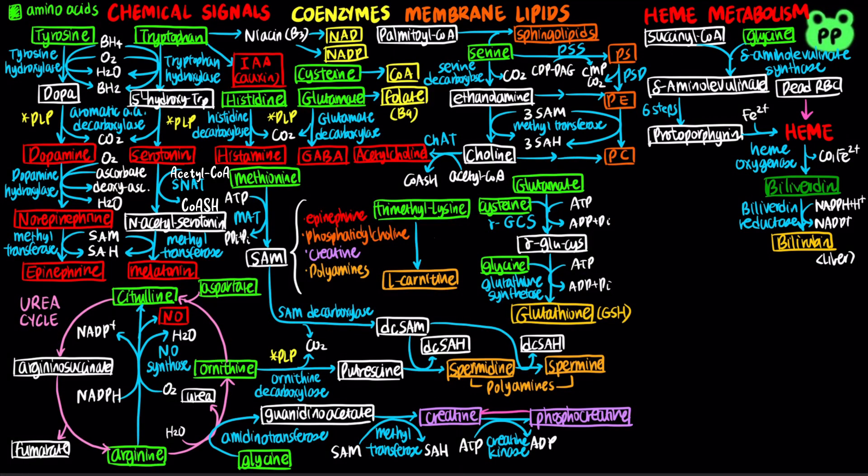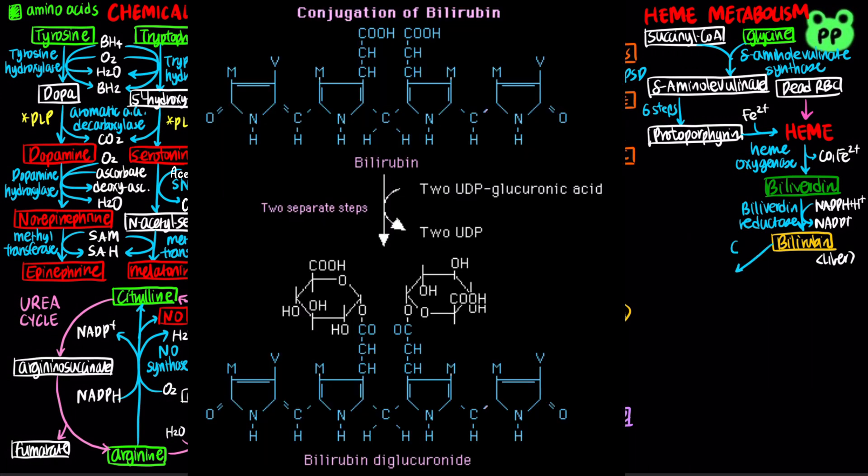Bilirubin is largely insoluble and travels in the bloodstream as a complex with serum albumin. In the liver, bilirubin is transformed into the bile pigment bilirubin diglucuronide, which is water-soluble and combines with bile salts and fats to form bile. Bile is stored in the gallbladder and secreted to the small intestine to emulsify lipids.